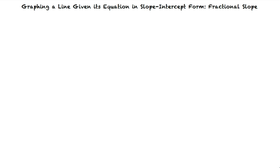This video will cover graphing a line given its equation in slope-intercept form with fractional slope. Can we review the equation for slope-intercept form? The equation for slope-intercept form is y equals mx plus b. In this form, the slope of the line is m and the y-intercept is b.